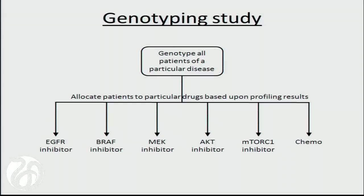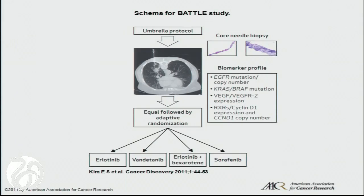There are really two competing trial designs to accomplish this. The first is a genotyping study — the best example being Roy Herbst's BATTLE study, where you genotype all patients with a particular disease and then allocate them to a particular drug based on profiling results. If you have an EGFR mutation, you get an EGFR inhibitor; a BRAF mutation, a RAF inhibitor; and so on. Maybe if you have no identifiable alterations, you give chemo. The BATTLE study used fresh biopsies and adaptive randomization to give patients erlotinib, vandetanib, erlotinib plus an inhibitor, or sorafenib.